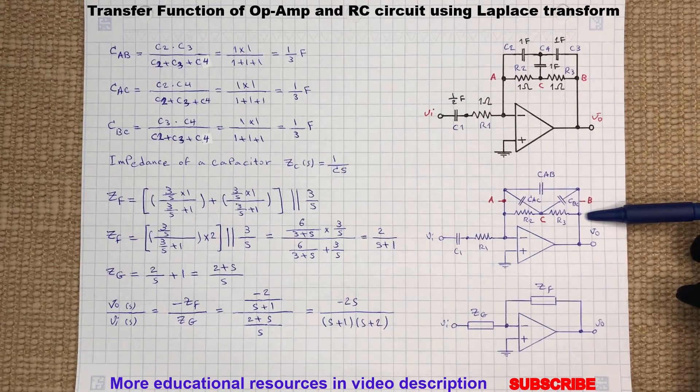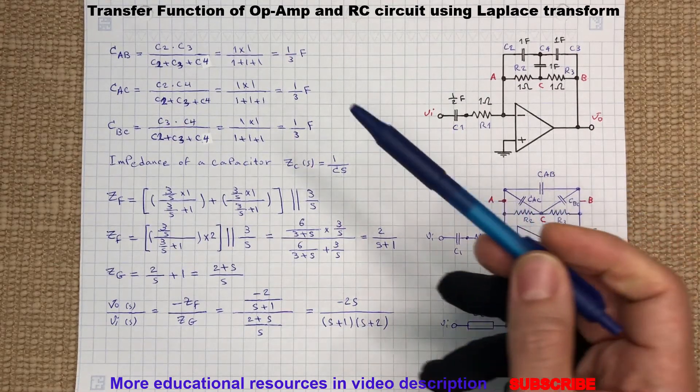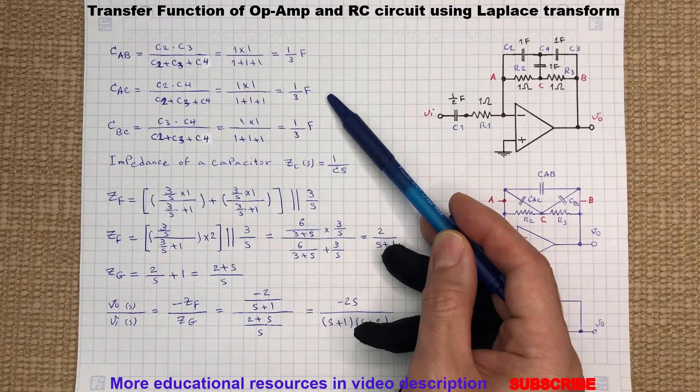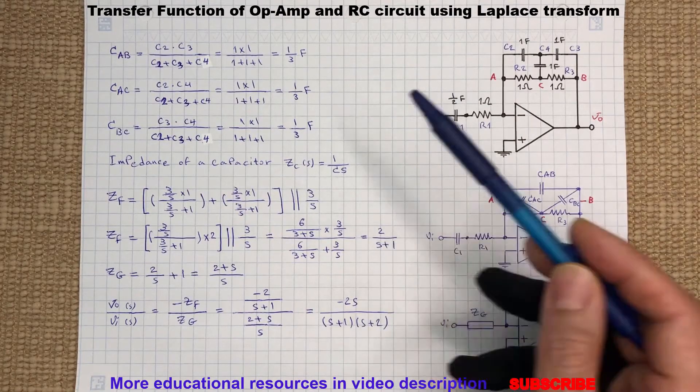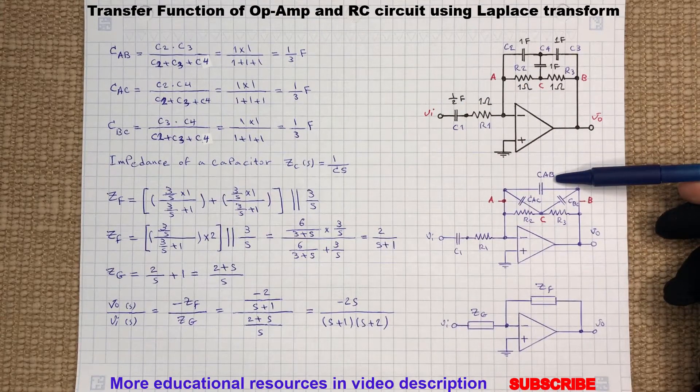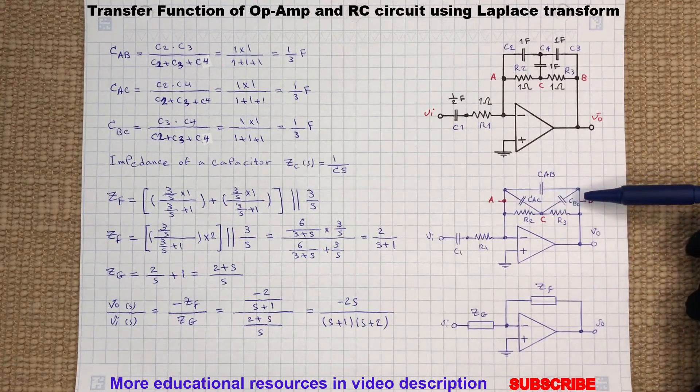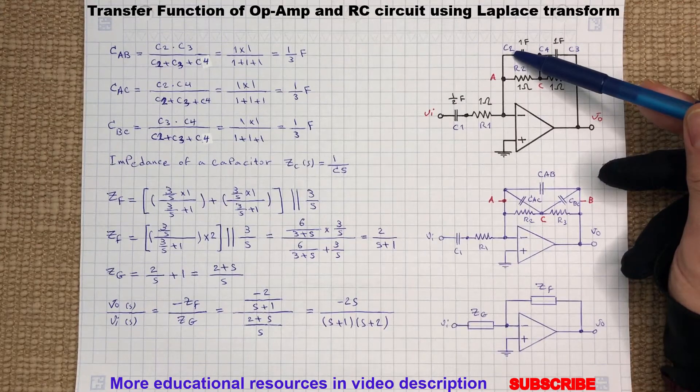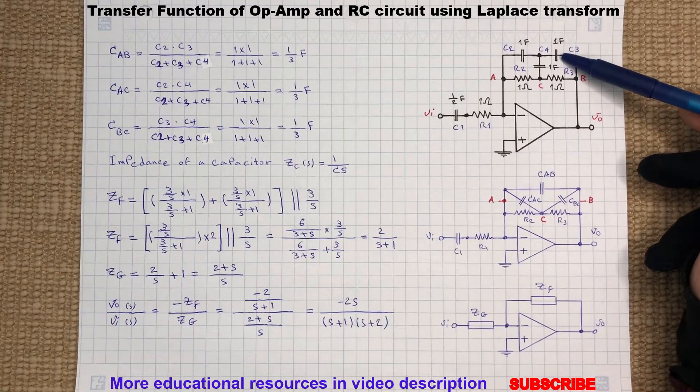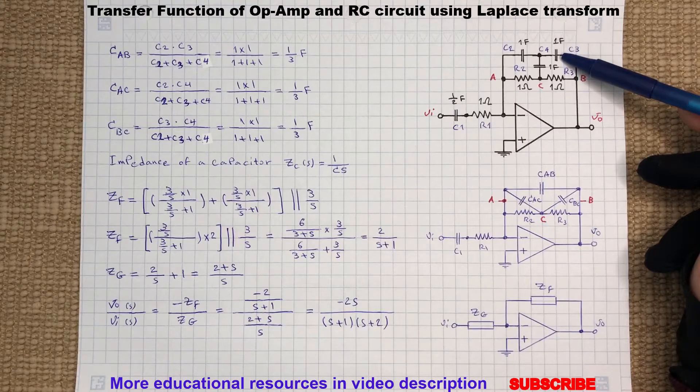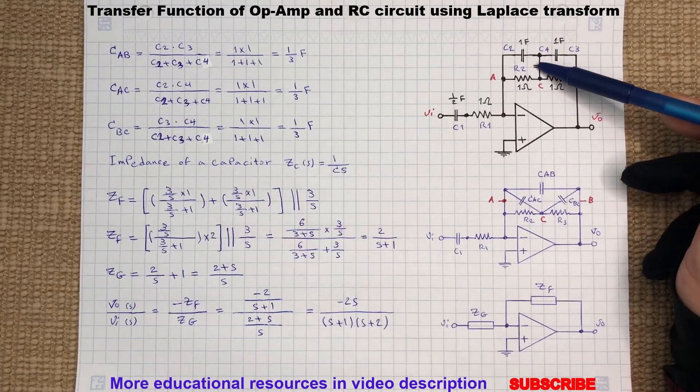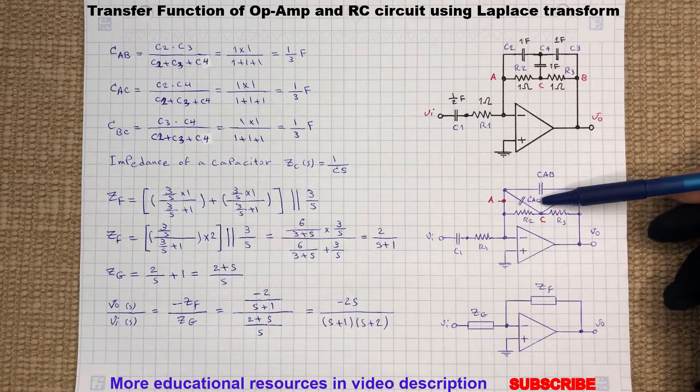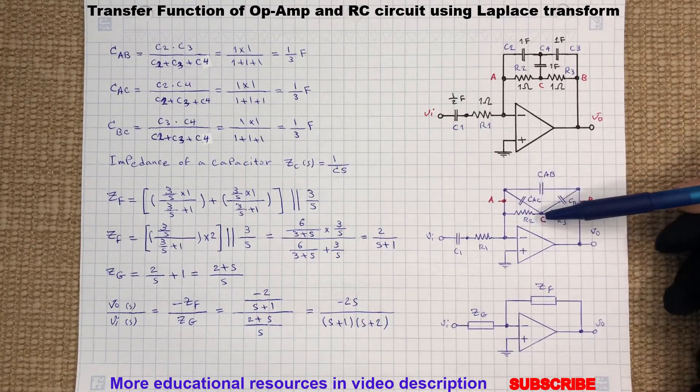Here is the simplified version of the above circuit and here's how we convert the capacitors from star to delta network. For example, the capacitance between node A and B will be C2 multiplied by C3 and divided by sum of C2, C3, C4. And with the same way we find the capacitance between node A and C and B and C.